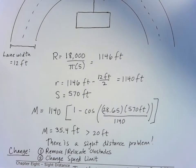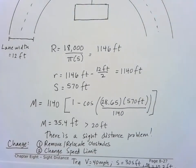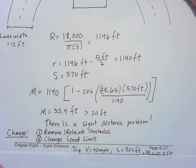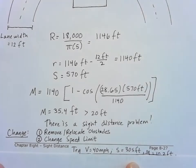Let's go ahead first and try 40 miles per hour. If we use 40 miles per hour, look that up, our stopping site distance would be 305 feet and then our M would only be 10.2. So that's definitely less than the 20.